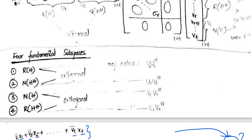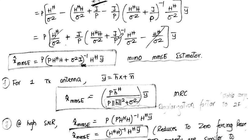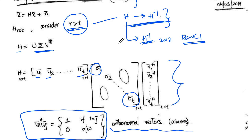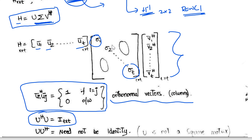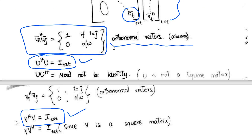Now I will go to the generic case: what happens when r is greater than t, which is usually the case in wireless communication. In this case H is not a square matrix and the inverse does not exist. That is when we mentioned we should go for Singular Value Decomposition (SVD). Performing SVD gives H = U Σ V^H, and we saw that V^H V = I and U^H U = I.